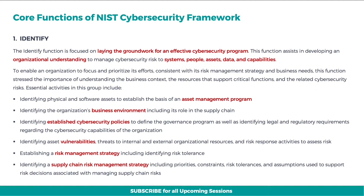Essential activities in this group include: identifying physical and software assets to establish the basis of an asset management program; identifying the organization's business environment including its role in the supply chain; identifying established cybersecurity policies to define the governance program as well as identifying legal and regulatory requirements; identifying asset vulnerabilities, threats to internal and external organizational resources, and risk response activities to assess risk; establishing a risk management strategy including identifying risk tolerance; and identifying a supply chain risk management strategy including priorities, constraints, risk tolerances, and assumptions used to support risk decisions.